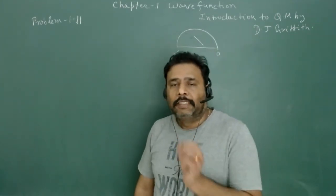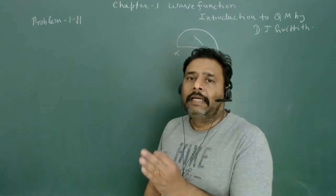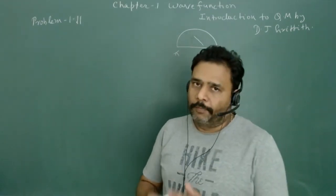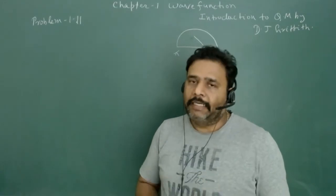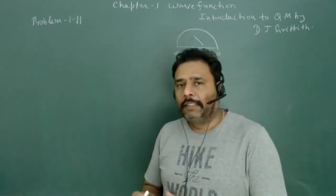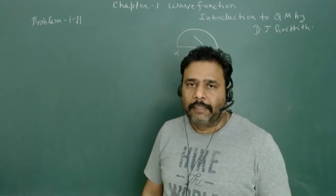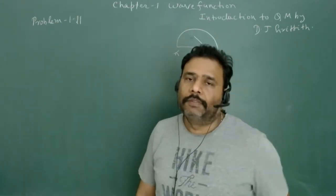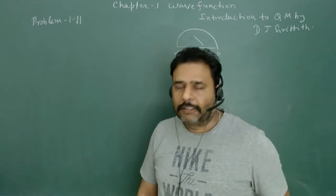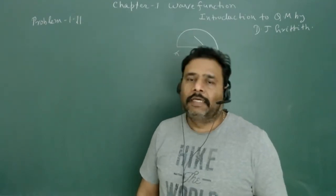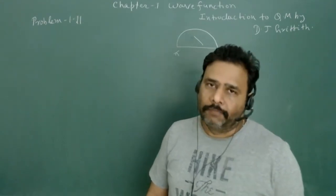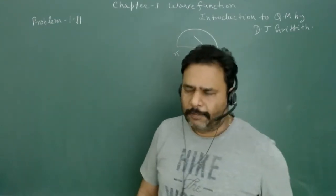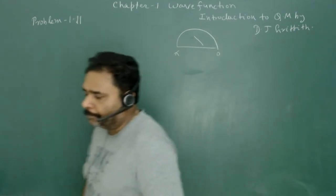It is given that every angle is equally likely. First we have to find the probability density, then plot it versus angle theta, then find the average value of theta, the average value of theta squared, and the standard deviation. After that we calculate the average value of sin theta, cos theta, and cos squared theta.